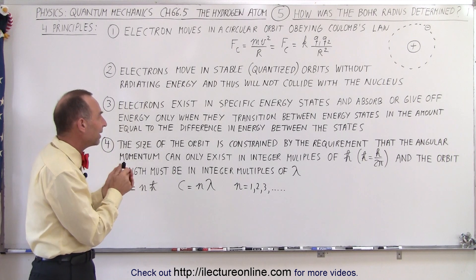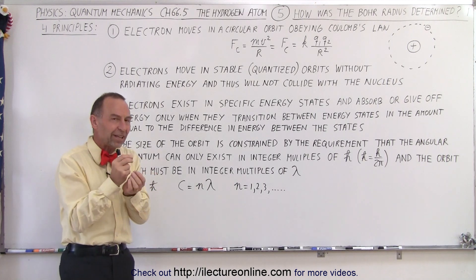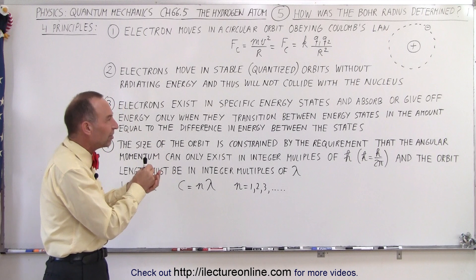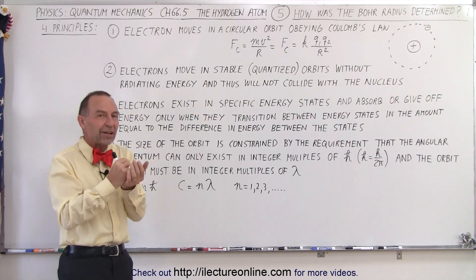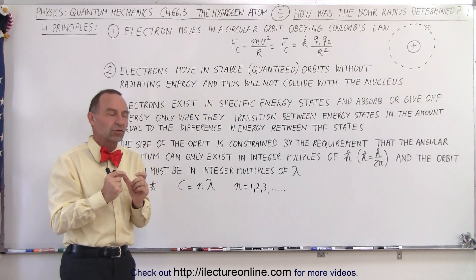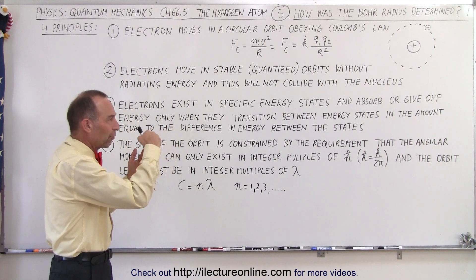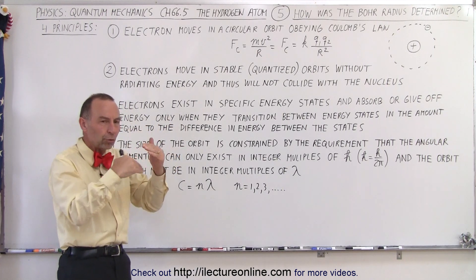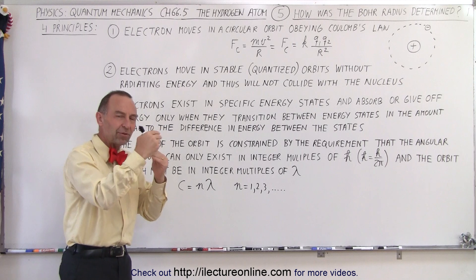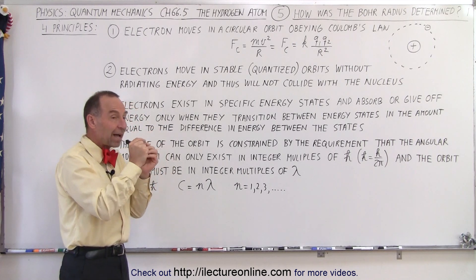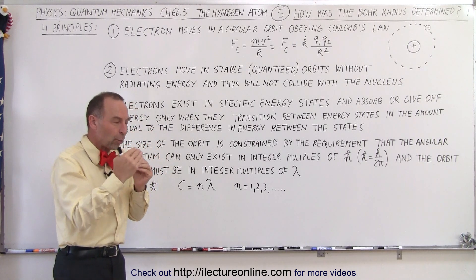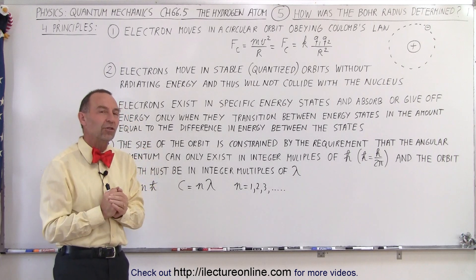Next, they said that electrons must exist in specific energy states and absorb and give off energy in quantized chunks. They can only go from one orbit to another orbit through transitional steps that were quantized, and each time the energy absorbed or given off was equal to the difference between those energy states.